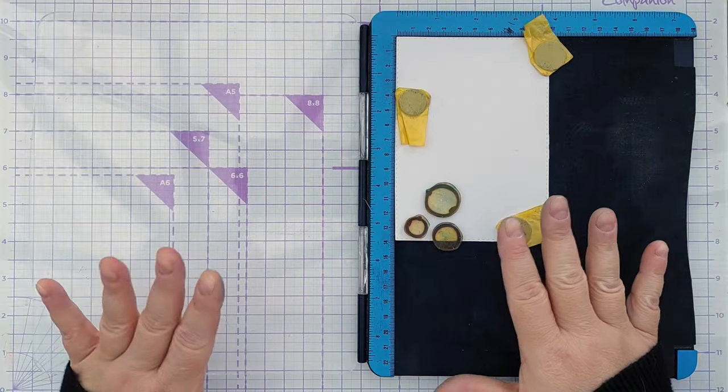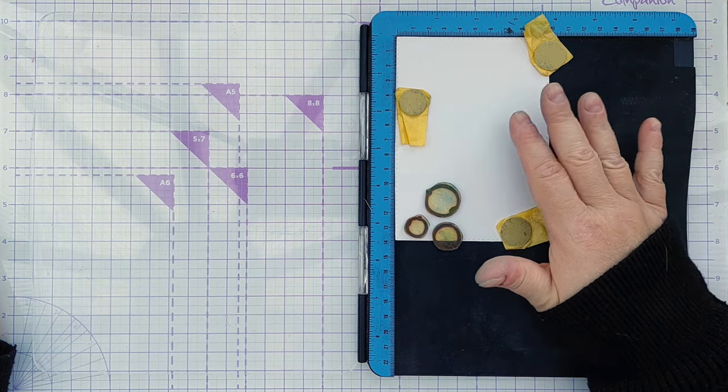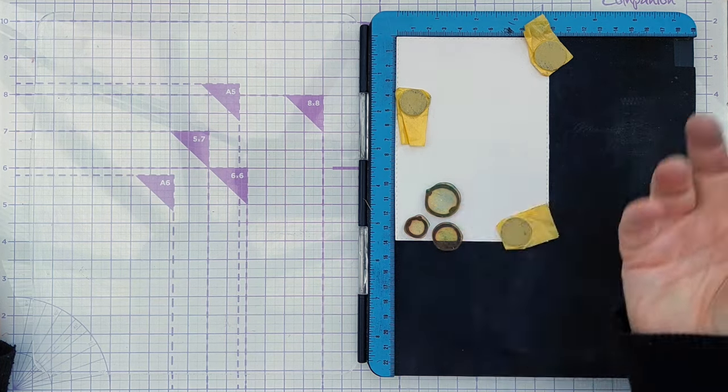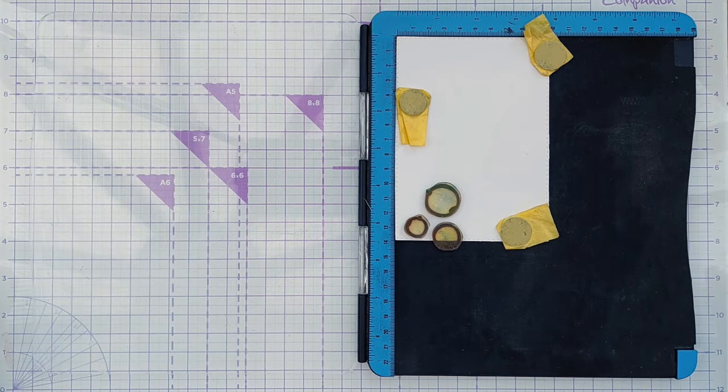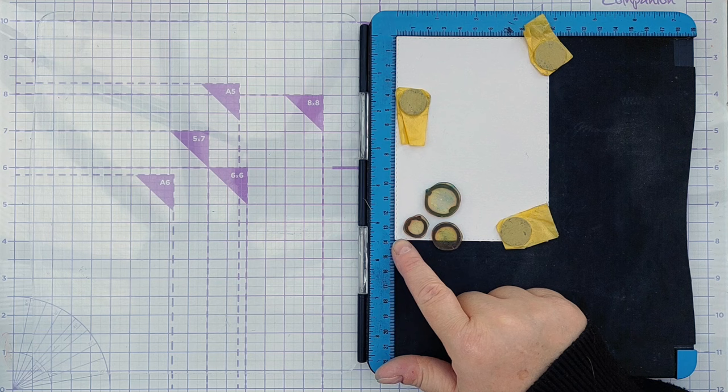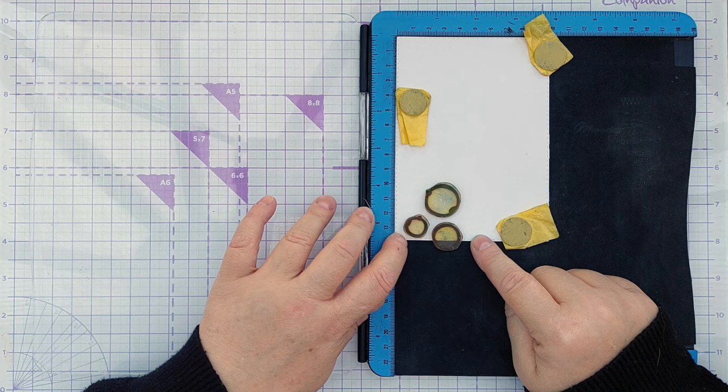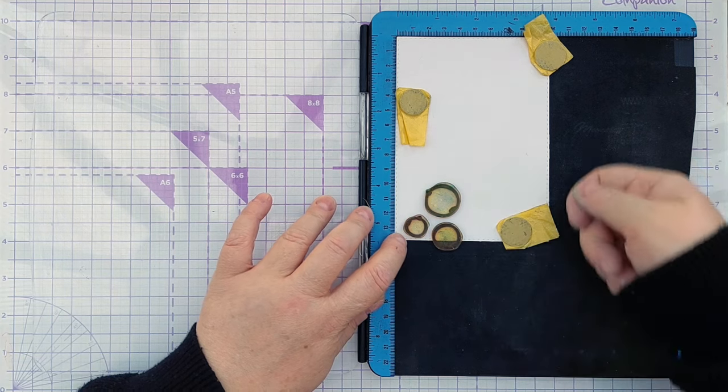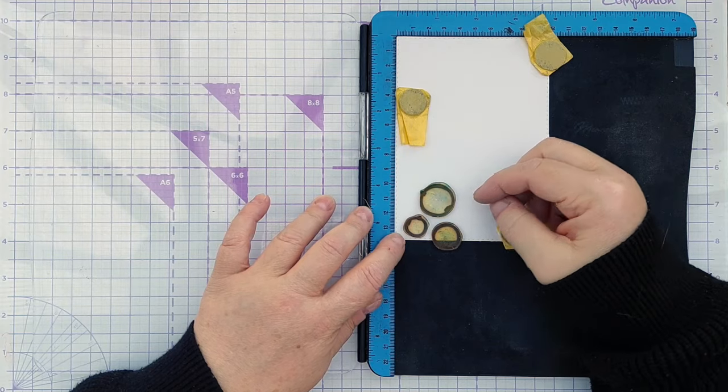So I've got my stamp positioner here. This is a piece of mixed media paper because I'm going to be adding some water and I want the colours that I add and the water to mix and mingle and spread around nicely. And I've got three scribbly circle stamps and I've put them at the bottom of this bit of card so that I can pull the card down and repeat stamp all the way up.